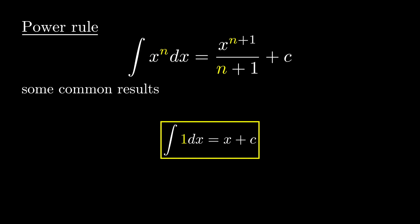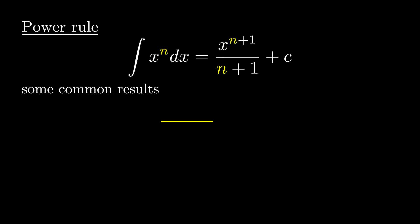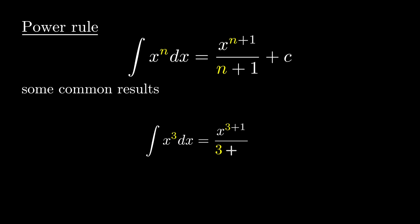Let's take another example: integration of x^3 dx. Here, in place of n, we are substituting 3. So we get the solution as x^(3+1) over (3+1) plus c, which is x^4 over 4 plus c.